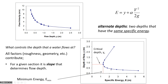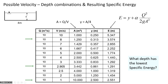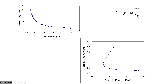There's something else really important about the specific energy diagram - it identifies what are known as alternate depths: two depths that have the same specific energy. For example, between a depth of 3.57 and 0.42 there are two different locations with different depths having the same specific energy. If you can have 2 meters of specific energy, the lower depth is associated with supercritical flow and the upper depth is associated with subcritical flow.